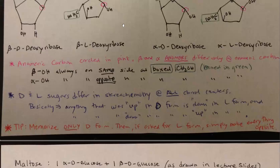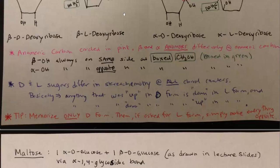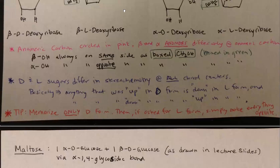And the alpha OH group on the anomeric carbon is always opposite the CH2OH group. The D and L sugars I mentioned before, they differ in stereochemistry at all the chiral centers. So basically anything that was up in the D form is down in the L form, vice versa.